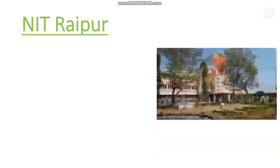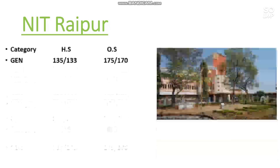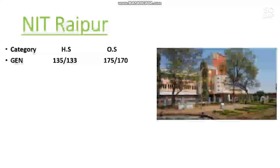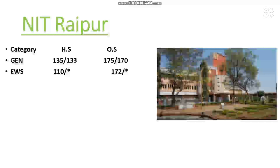Let's start the video. Here is the first one, that is NIT Raipur. I will discuss the marks required category-wise for home state and other state. For general home state, 135 marks are needed for male and 133 for female. For other state, it is 175 marks for male and 174 for female. This is about the EC branch.